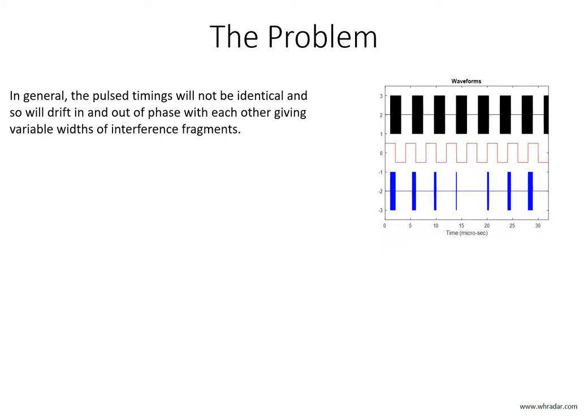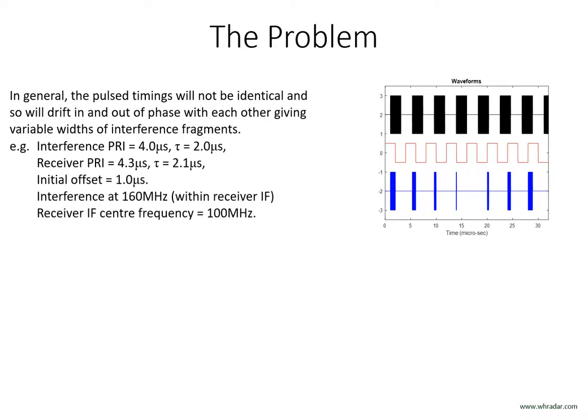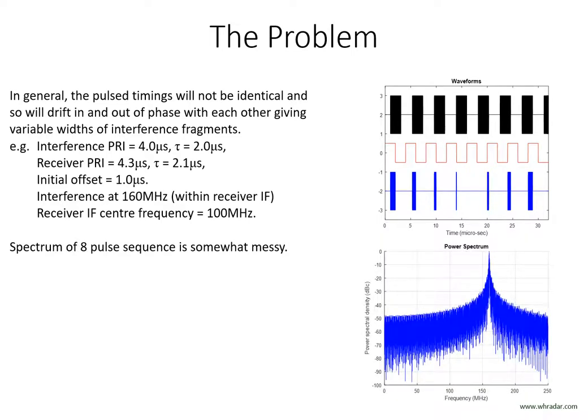The previous cases were all based on both radars operating on precisely the same PRF. In reality there will inevitably be slight differences in PRF even if they are intended to be nominally the same. Slight differences in PRF will cause a continuous drift in the timing offsets between the two, so the width of the pulse fragments will always be changing. Some example timings using different PRFs have been modelled here, and we can see from the waveforms on the top right how the width of the interference fragments is modulated. The spectrum of the 8-pulse sequence of interference fragments is shown bottom right and lacks the regular structure of a constant width pulse waveform. The interference at 100 MHz is about 45 dBs below its peak.